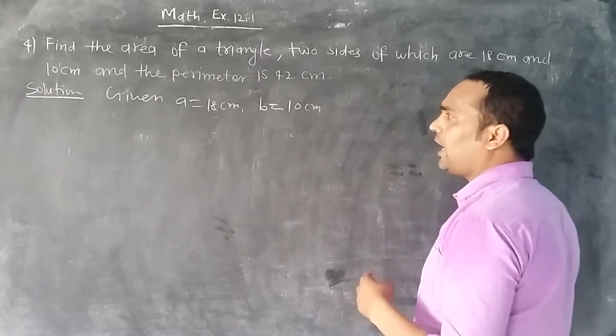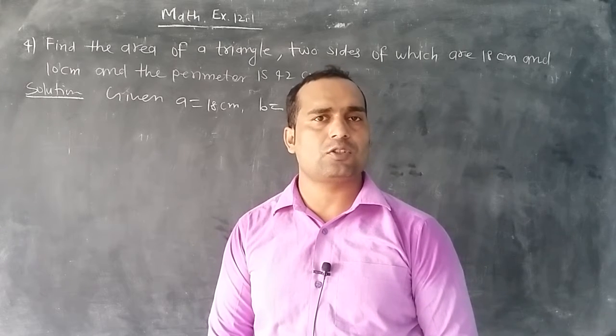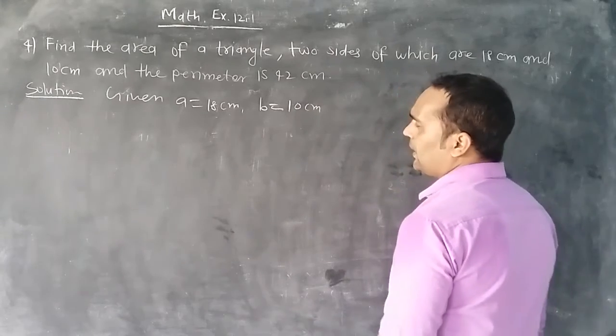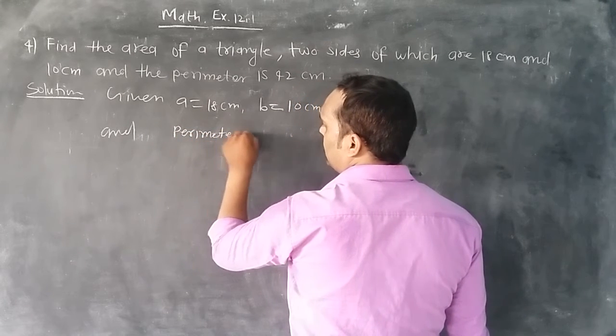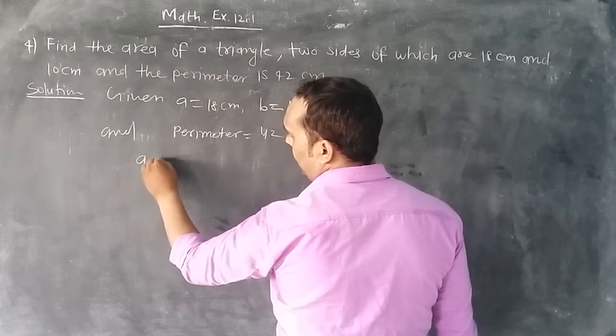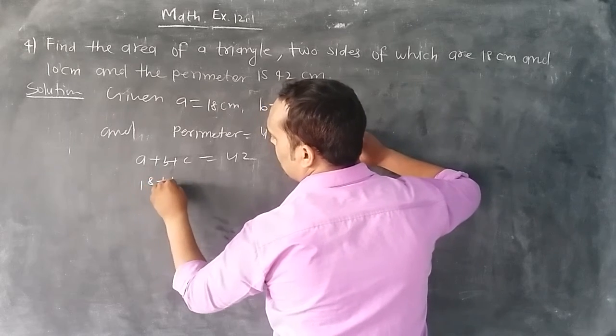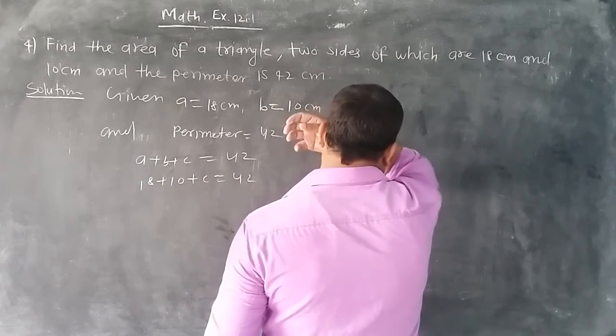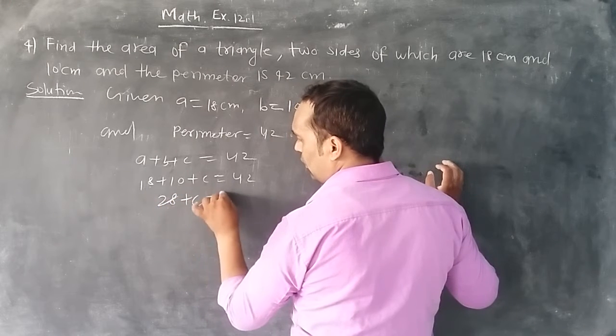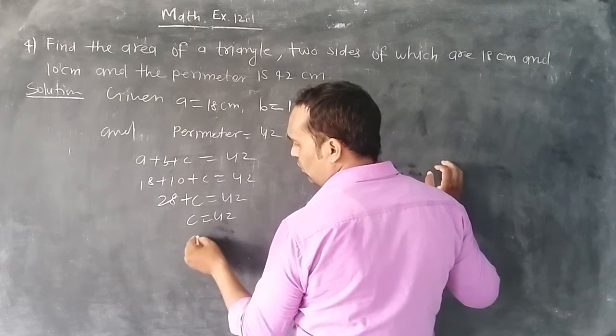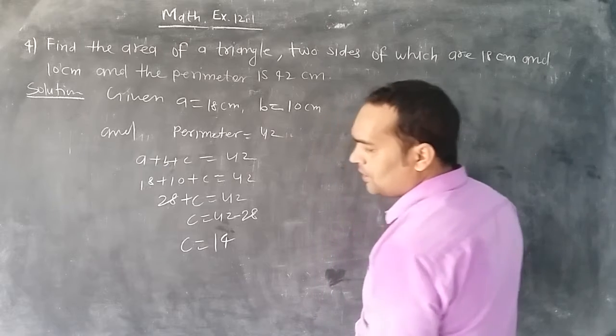The perimeter is 42. We have to find the area. Perimeter a+b+c equals 42. So 18+10+c equals 42. That means 28+c equals 42, so c equals 42-28 equals 14. We found c equals 14.